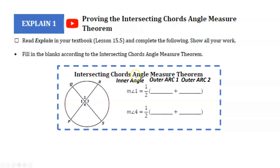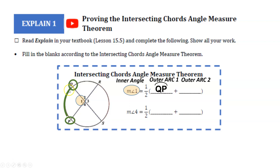We're going to be looking at some angles that are inside the circle and some outer arcs at the edge of the circle. Feel free to pause if I go too fast — it's important to understand where everything goes, because it will be helpful when setting up our equations. The measure of angle 1, which is inside, is equal to half the sum of the outer arcs — in this case arc QP plus the other outer arc.